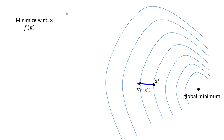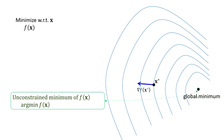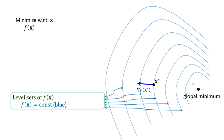Let's look at an unconstrained optimization problem: minimize f of x. This point is the global minimum. The gradient of f of x-star at the point x-star is shown here. The blue contours are level sets — each contour represents f of x equals a constant. This innermost contour represents f of x equals a very small constant, and as we move further from the global minimum, the constant value keeps increasing.